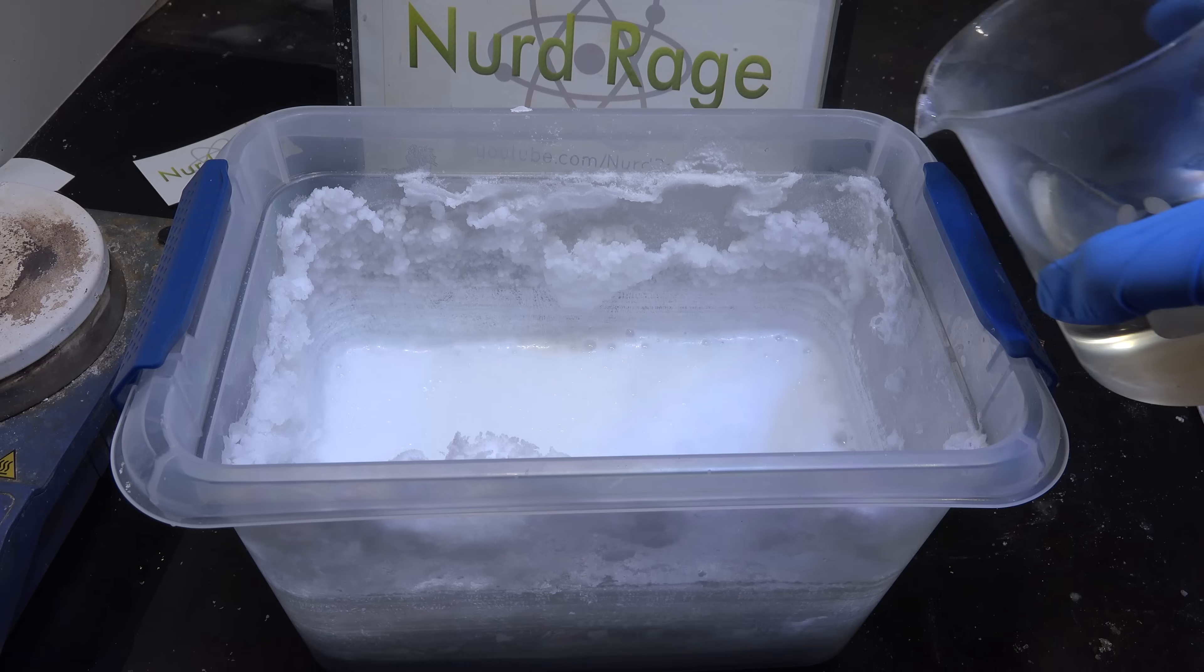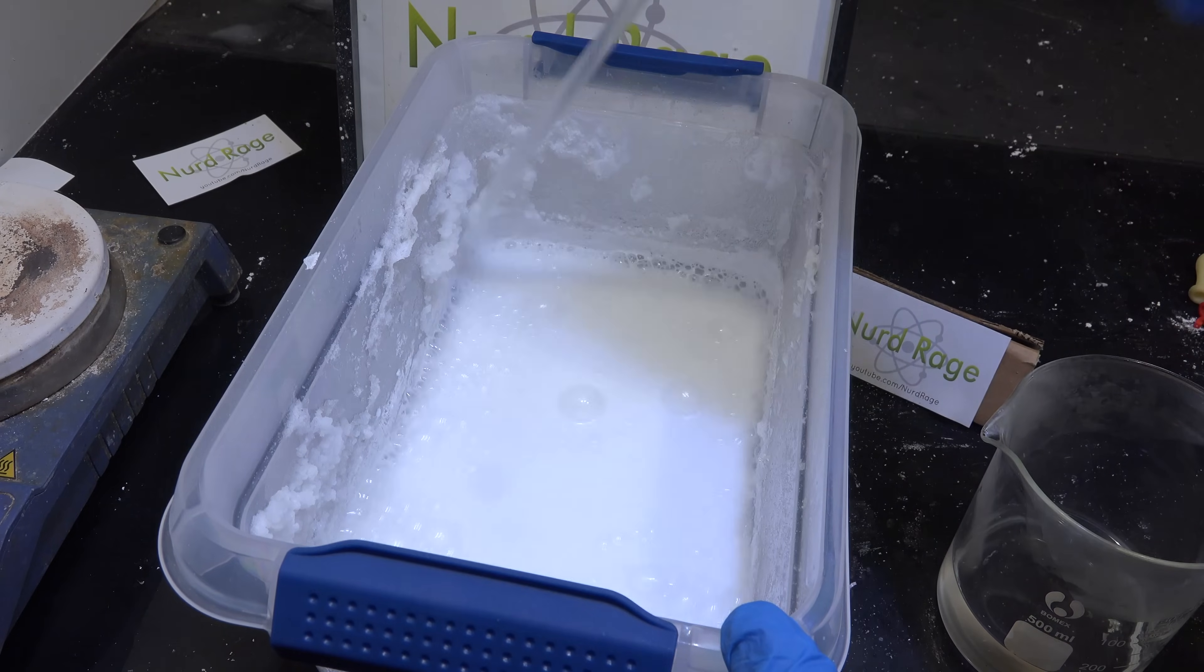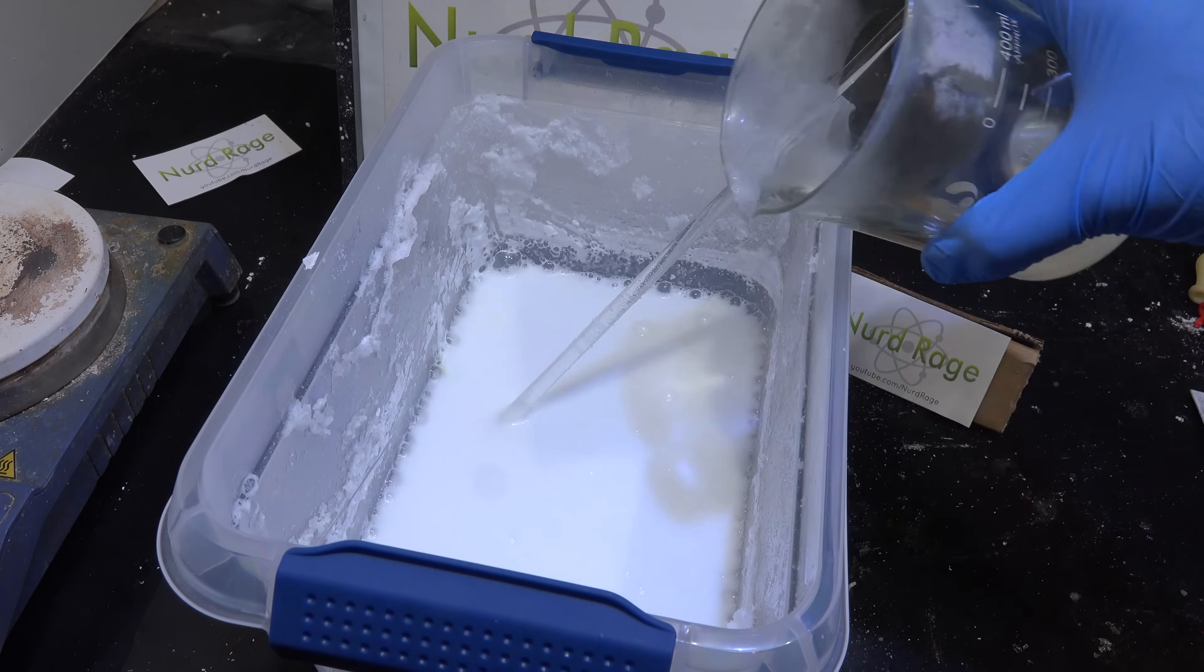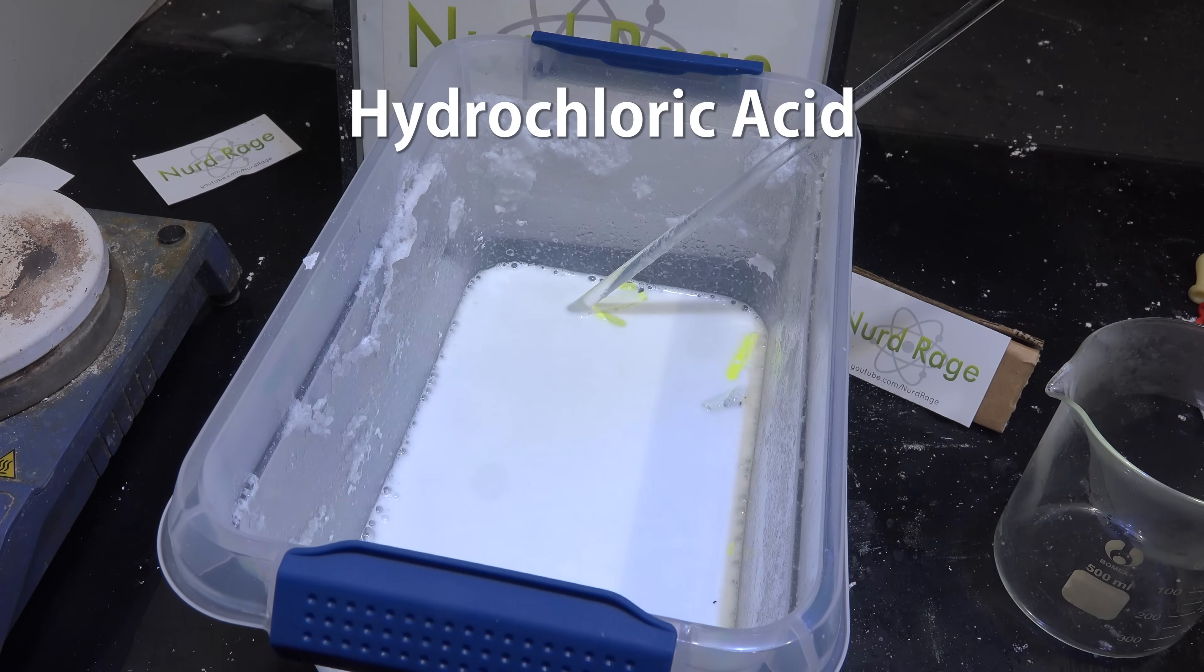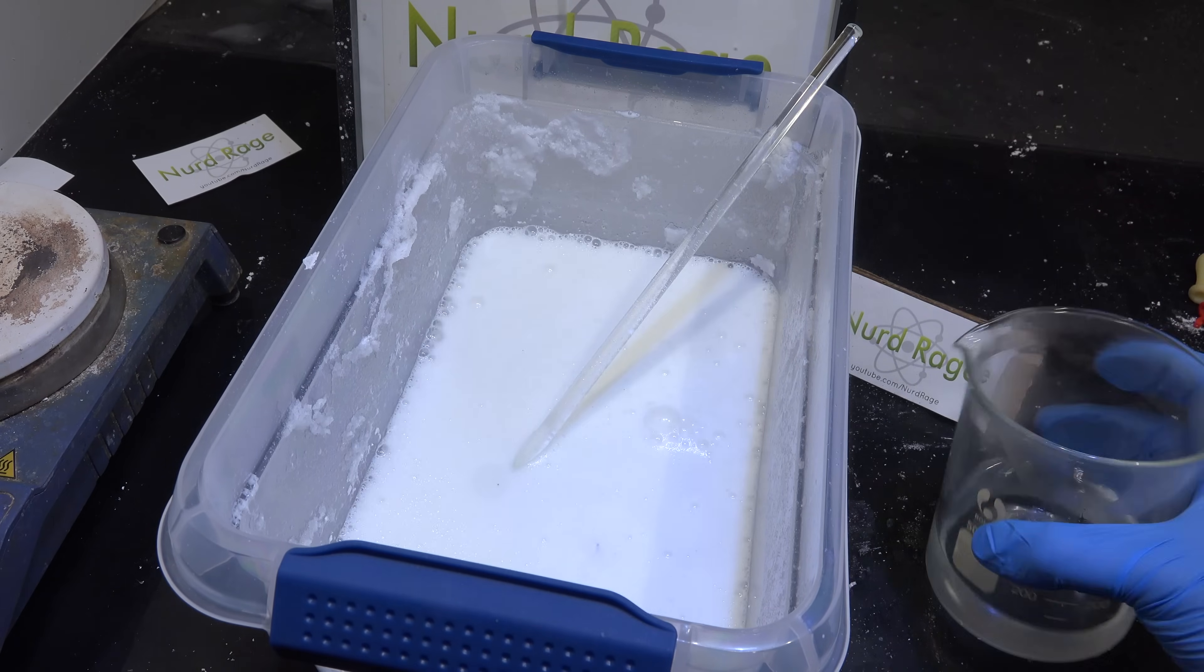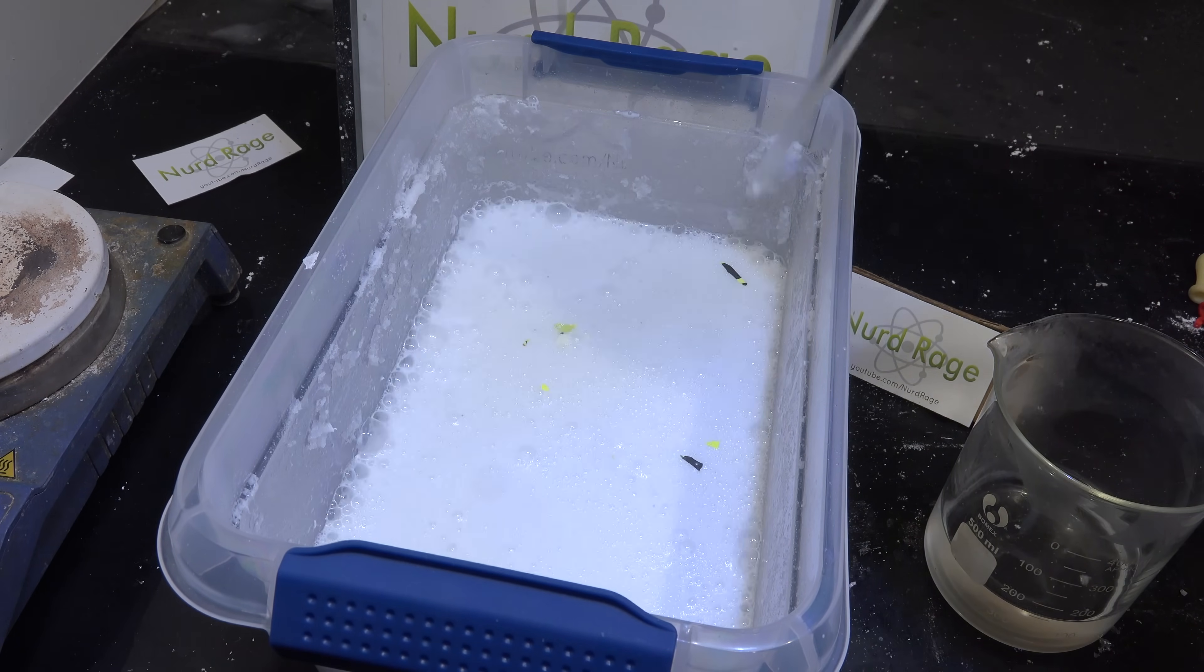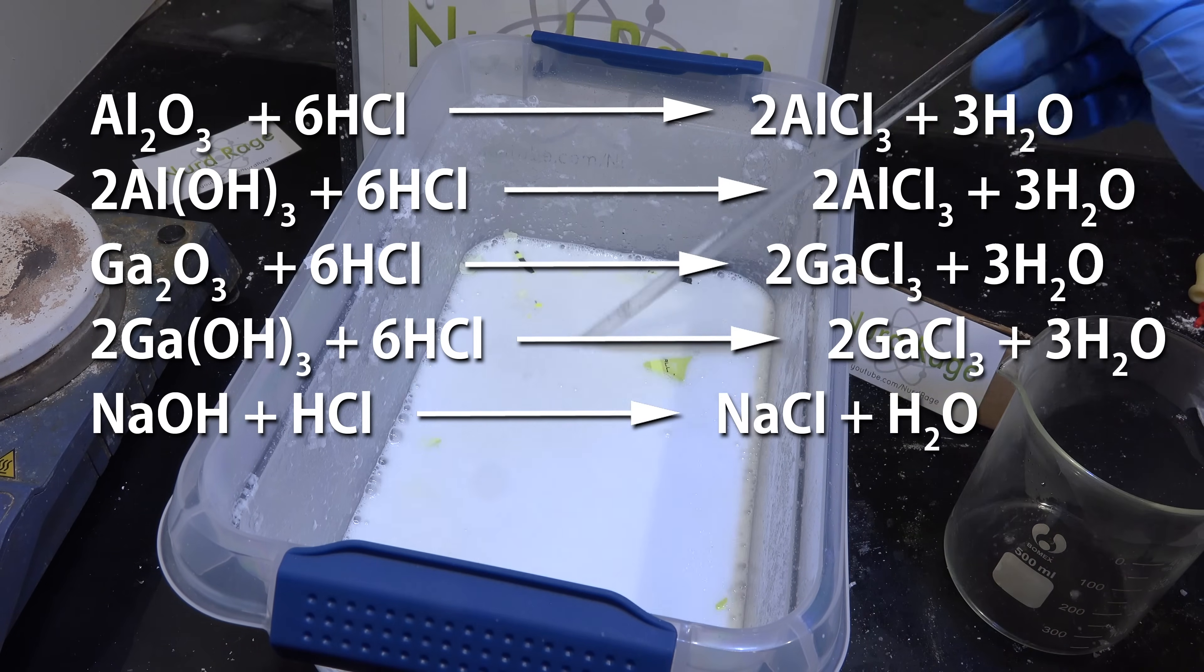Now this waste is mostly aluminum oxide as well as sodium hydroxide and tiny amounts of gallium hydroxide. First we'll need to neutralize all of it with concentrated hydrochloric acid. It's bubbling because it's releasing carbon dioxide. It absorbed a lot while sitting at the back of my lab for the last couple of months.